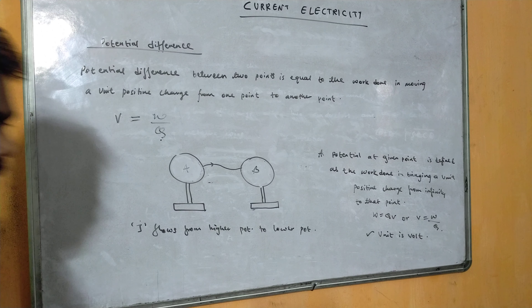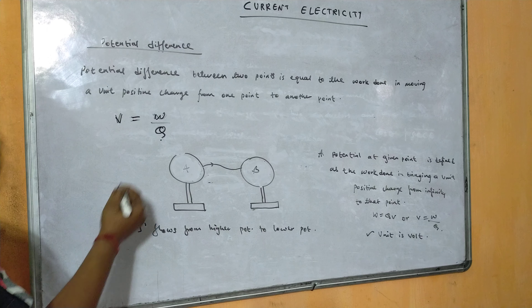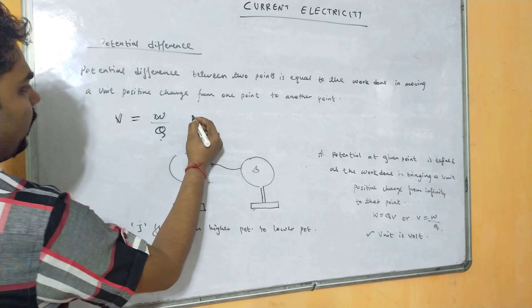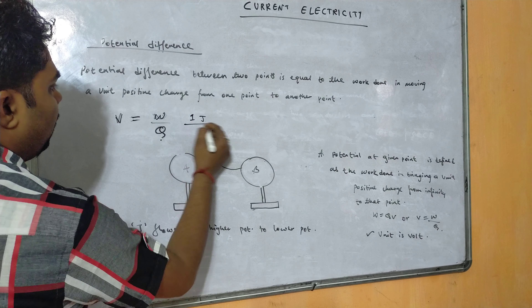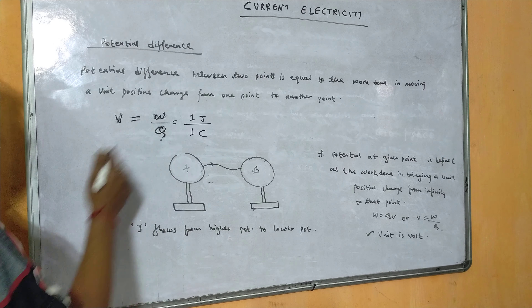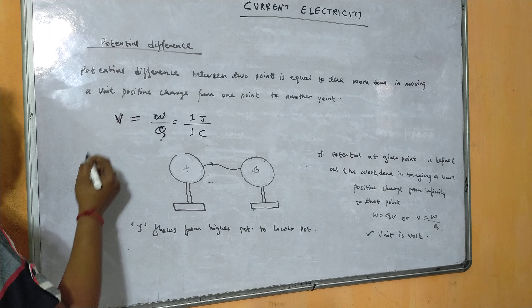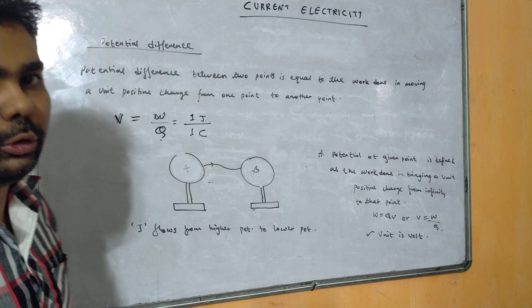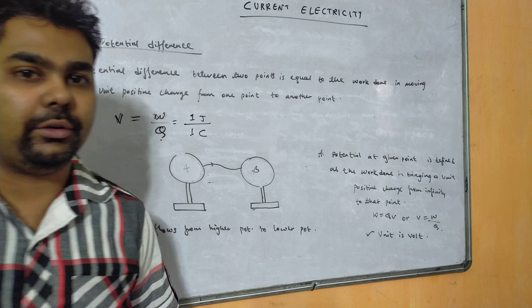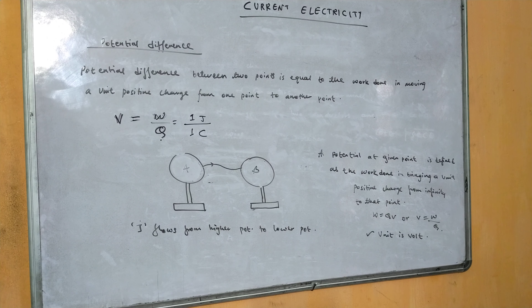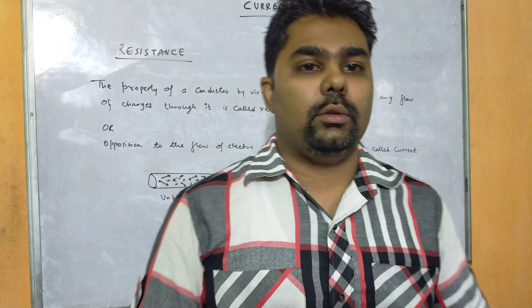The formula is V = W/Q, where W is work done and Q is the charge. When one joule of energy is expended in transferring one coulomb of charge from one terminal to another, the potential difference is said to be one volt. Now, the opposition to the flow of electric current is considered to be resistance.